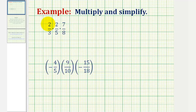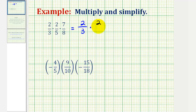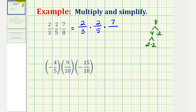Looking at our first product, we're going to write the numerators and denominators in prime-factored form to help us simplify. The first fraction, two-thirds — both two and three are prime. The second fraction, two-fifths — two and five are both prime. For the third fraction, seven is prime, but for eight, the prime factorization would be four times two, and four is equal to two times two, so the prime factorization of eight would be two times two times two.